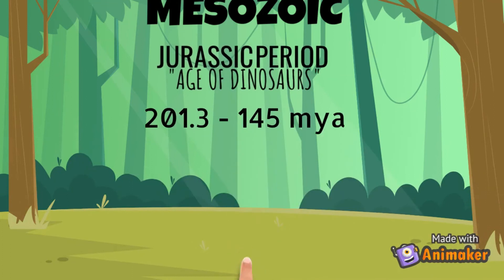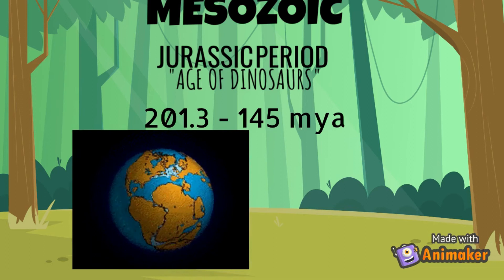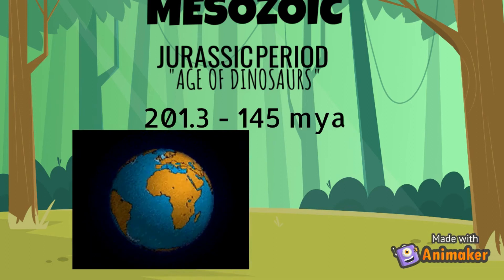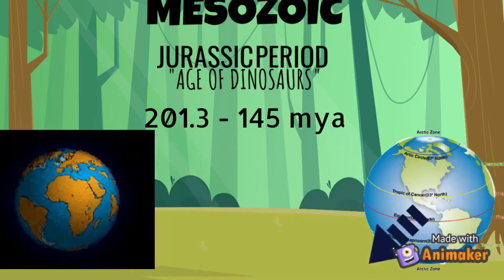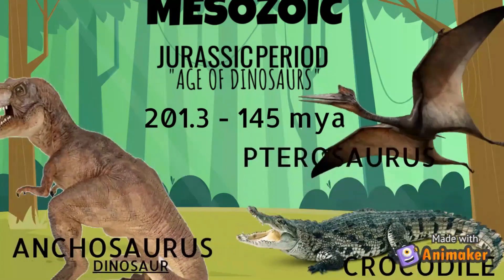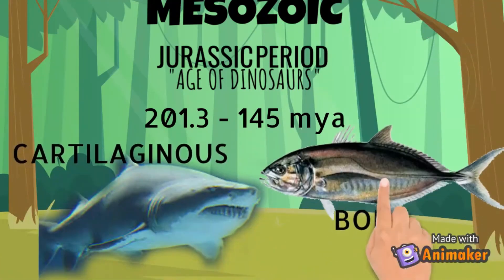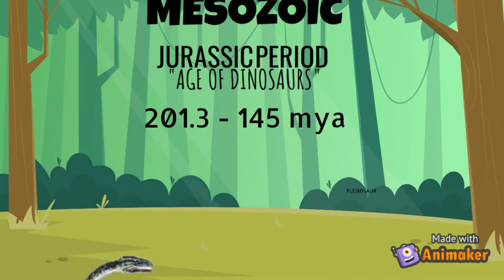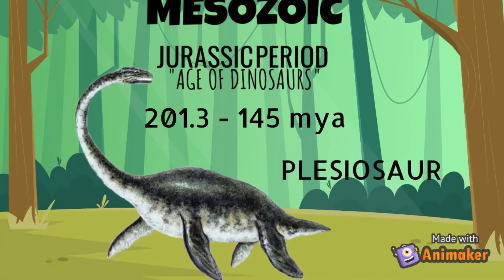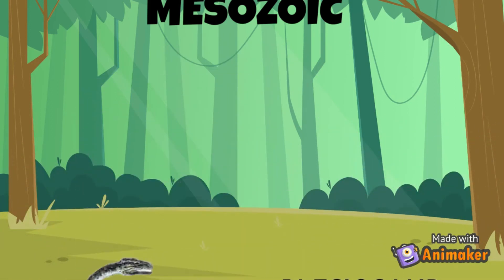Next is the Jurassic period, that extends from 201.3 to 145 million years ago. Tangia was breaking up, though the continents were still close together. Analyses suggest that an expanded tropical zone was apparent. Archosaurs and pterosaurs were dominant. Cartilaginous and bony fishes were abundant. Large fishes and marine reptiles were also common. Jurassic plesiosaurs are some of the largest carnivorous reptiles ever discovered.